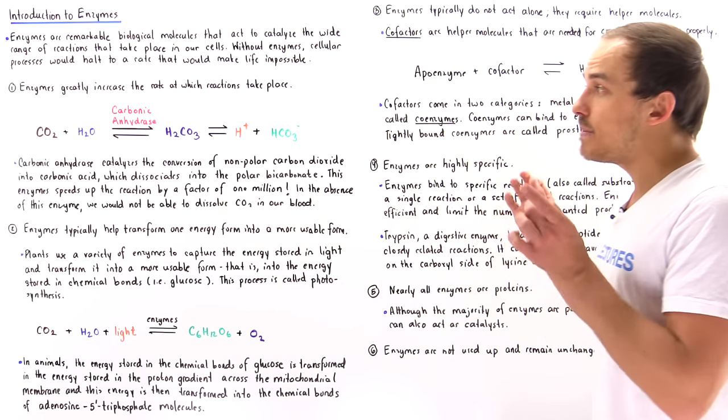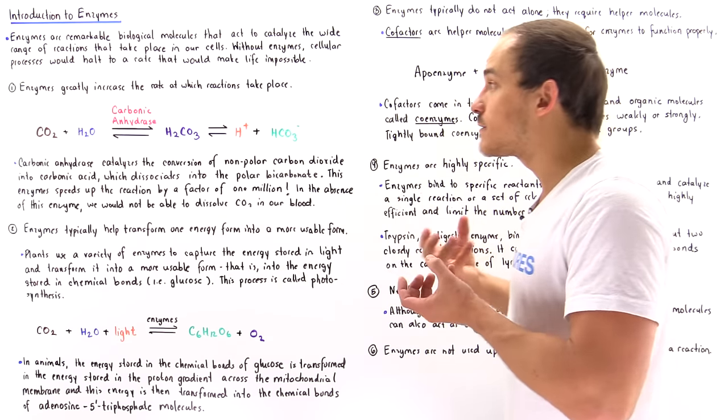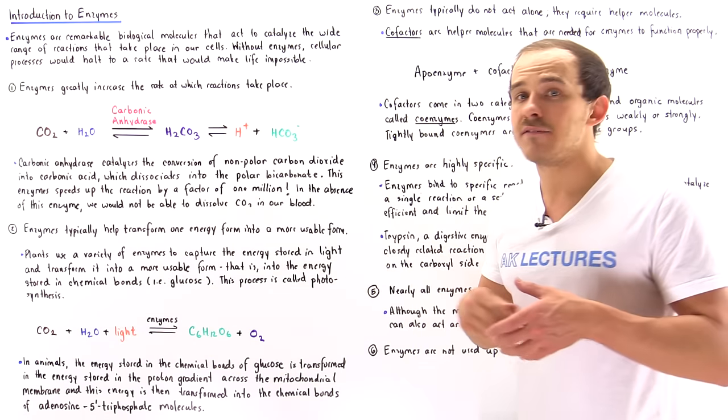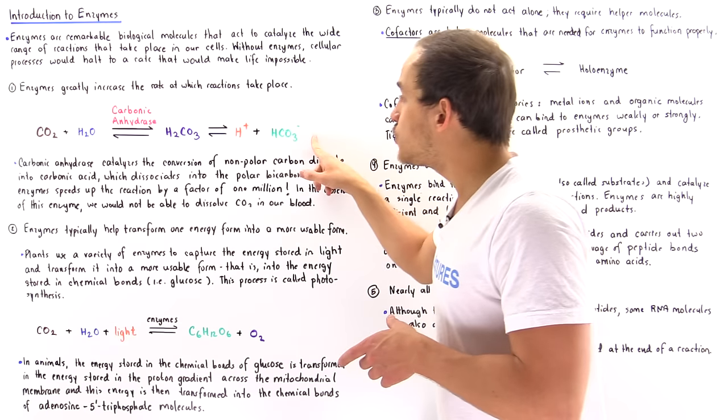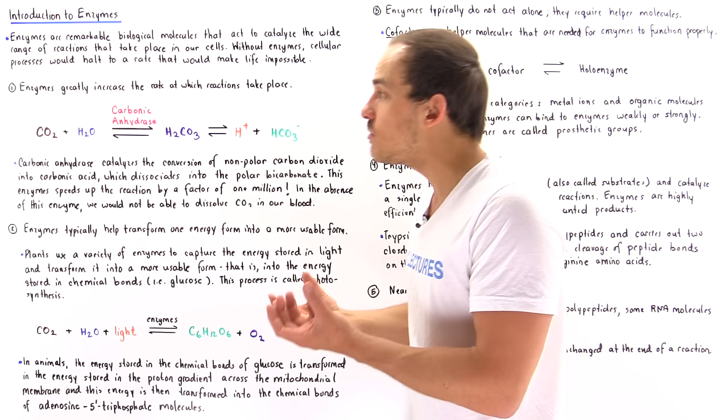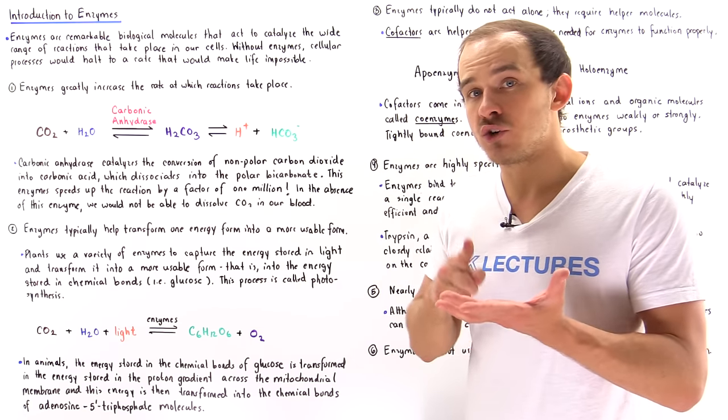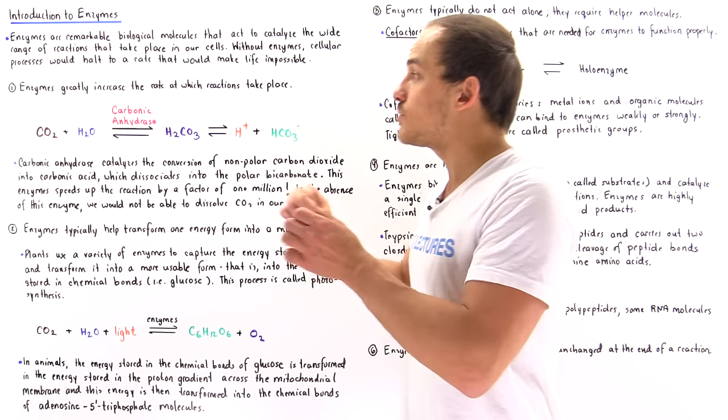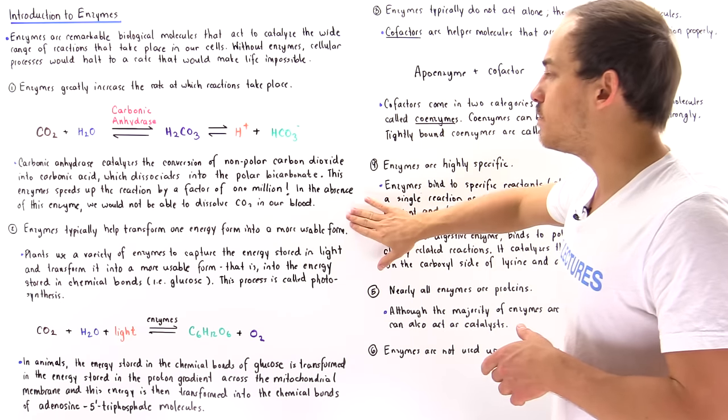So this enzyme basically helps us transform the non-polar carbon dioxide that cannot dissolve inside our blood into a form that can be dissolved inside our blood. And that's precisely what allows us to effectively and quickly get rid of the carbon dioxide from the cells and eventually expel it by the lungs of our body.